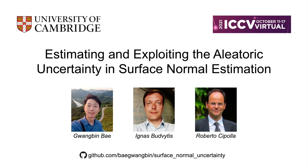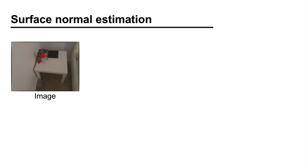Hi, my name is Gwangbin Bae. In this video, I will present the work estimating and exploiting the aleatoric uncertainty in surface normal estimation, which was done jointly with Ignis Budvitis and Roberto Cipolla. Given a single RGB image, our goal is to estimate the surface normal at each pixel.